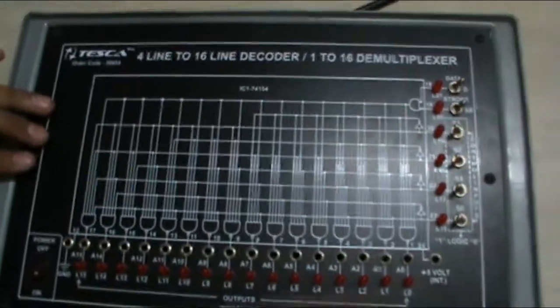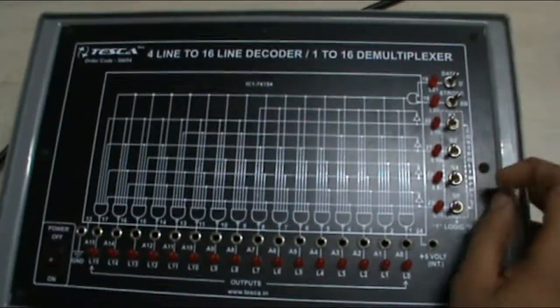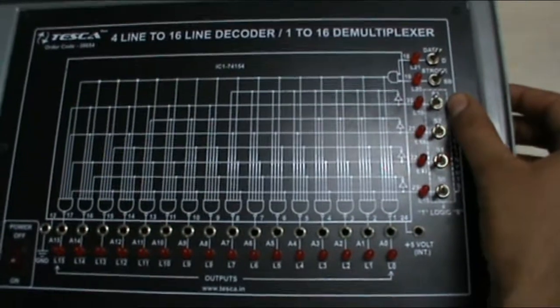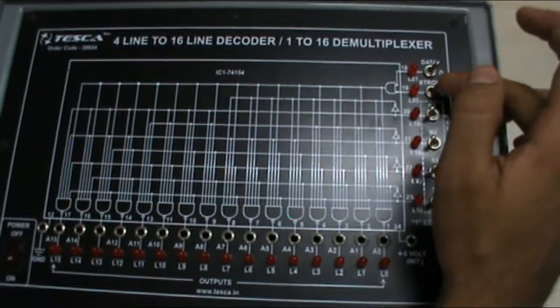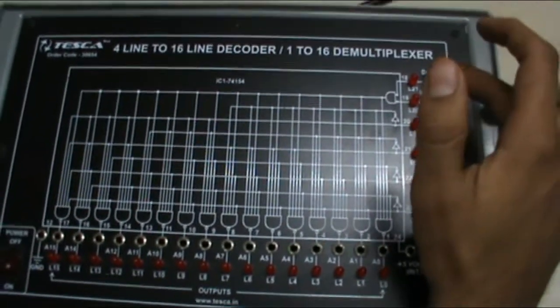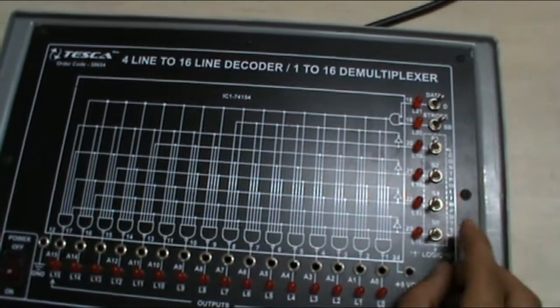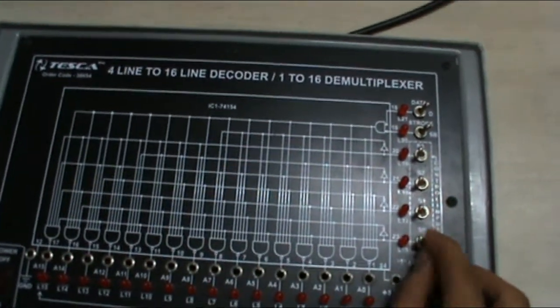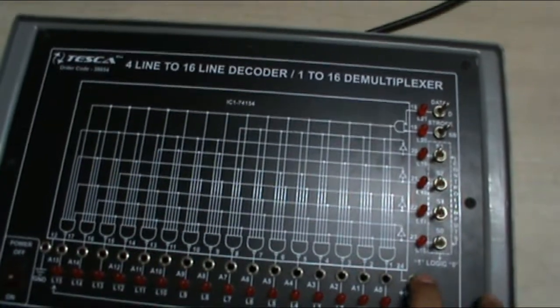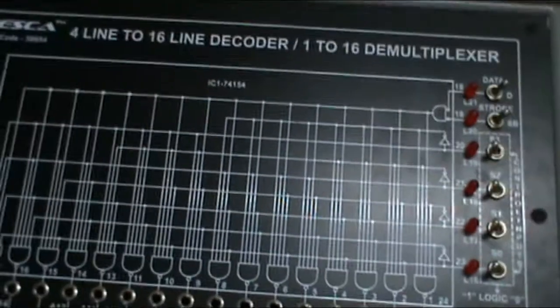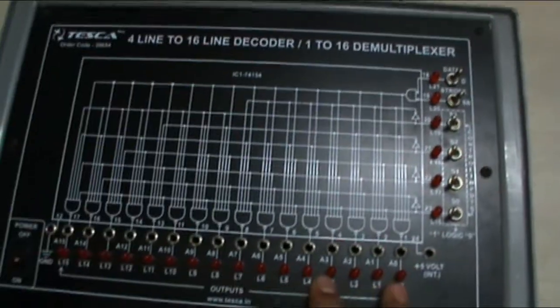Now this is our equipment. In this we have output LEDs from L0 to L15. This is the control inputs from S0 to S3, the strobe switch, and the data D switch. This position is logic 1 and this position is logic 0 as stated on the panel.